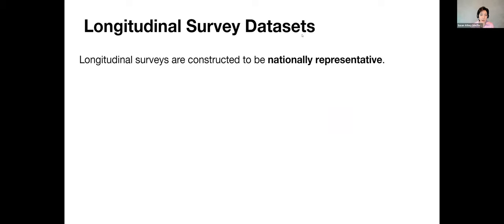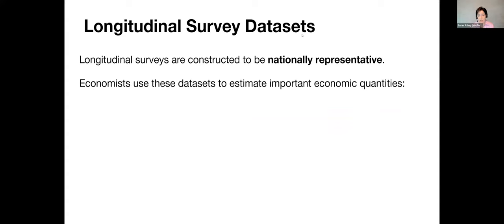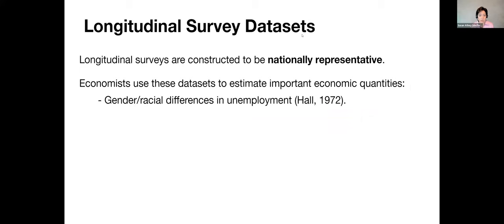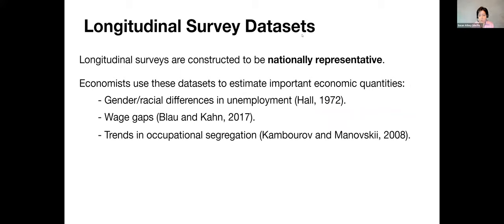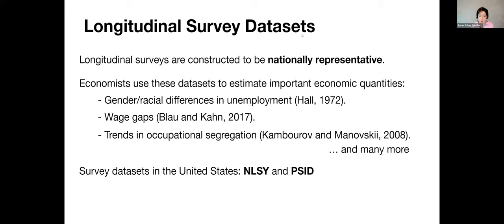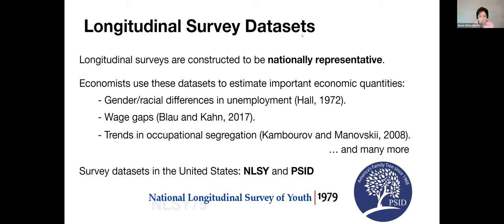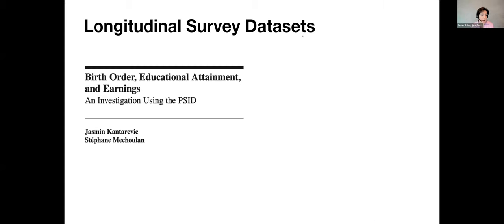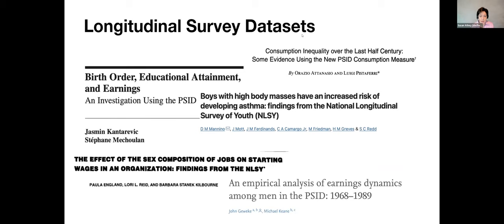A lot of economic research about labor markets takes place in Norway, Sweden, and Denmark because we have data there, but that leaves out economies like the US where we haven't got that data organized. The longitudinal surveys are constructed to be nationally representative, and we use them to estimate economic quantities like gender or racial differences in unemployment, wage gaps, trends in occupational segregation, and inequality. In the US, two of the big ones are the NLSY and the PSID.